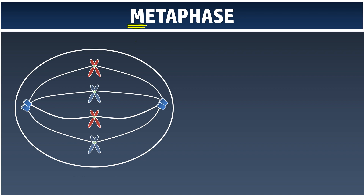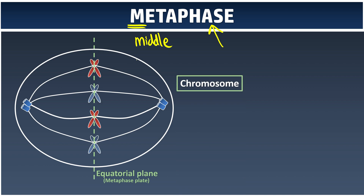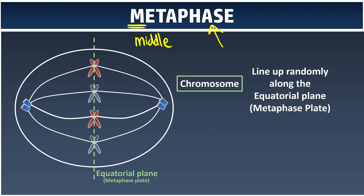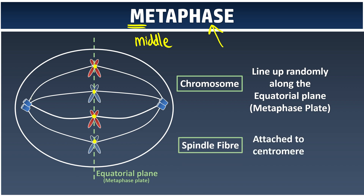After prophase comes metaphase. M is for middle — all the chromosomes line up in the middle of the cell. This line has a specific name called the equatorial plane, or alternatively the metaphase plate. At this stage you can see that chromosomes line up randomly along the metaphase plate. The spindle fiber is now attached to the centromere of the chromosomes. They actually have more spindle fibers than drawn — I just simplified the illustration.